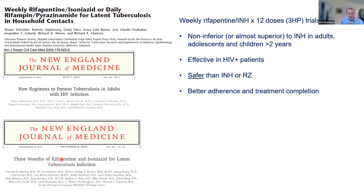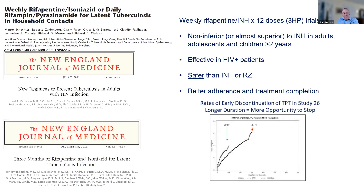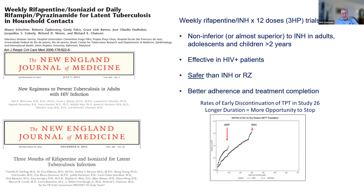A few words about preventive therapy: we showed in a series of trials beginning 15 years ago that a 12-dose three-month regimen of weekly rifapentine and isoniazid — called 3HP — was effective in preventing tuberculosis in high-risk individuals, including people with HIV infection. We showed it was non-inferior to nine or twelve months of isoniazid, it was safer, and it had better adherence and treatment completion. Even though the discontinuation rate is slightly higher with 3HP, it's done sooner, so there's less opportunity to give up.